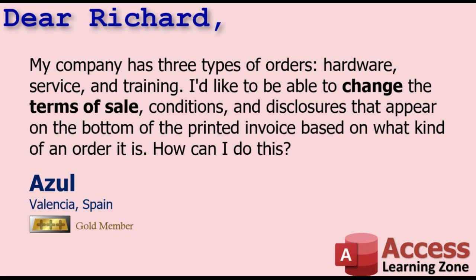Azul from Valencia, Spain — one of my gold members — asks: my company has three types of orders: hardware, service, and training. I'd like to change the terms of sale, conditions, and disclosures that appear on the bottom of the printed invoice based on what kind of order it is. Well, provided each order is only one type, it's easy. We'll create a table to hold the terms of sale, put a combo box on the order form to pick it, and drop a text box on the invoice to display those terms.